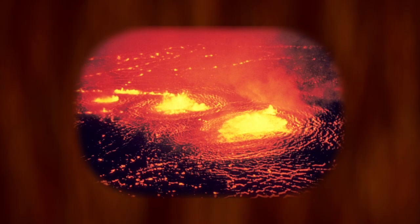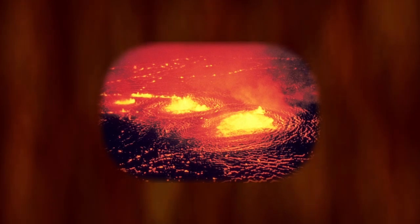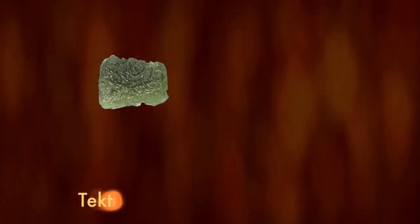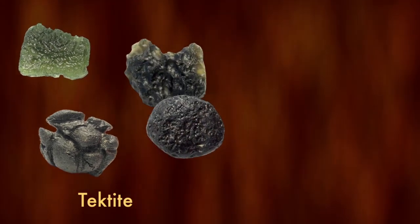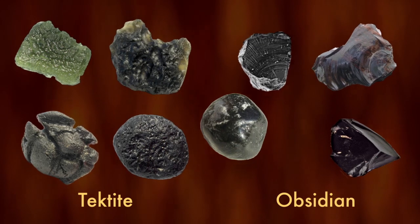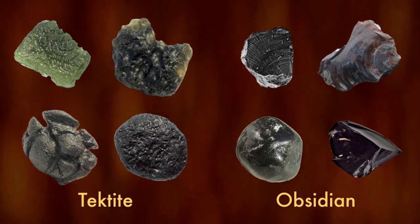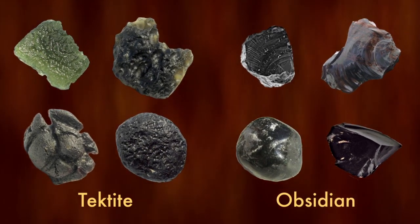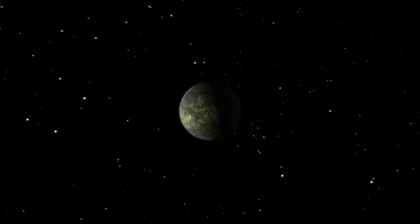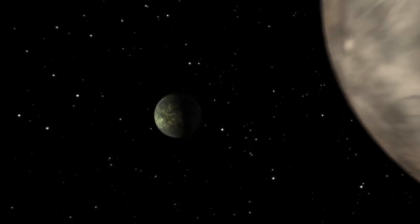What's strange is that tektite and obsidian are formed from molten materials. Tektites are hardened chunks of lava found around meteor impacts on Earth, and obsidian is volcanic glass. Vaporized rocks can form silicon monoxide gas. You don't get this kind of material by just smashing a couple of asteroids together. The evidence suggests something much more cataclysmic.